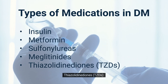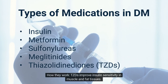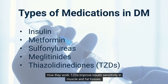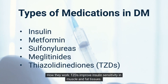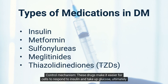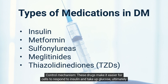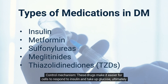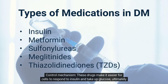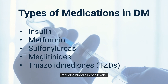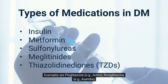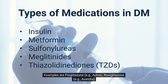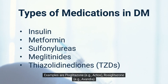Thiazolidinediones (TZDs) improve insulin sensitivity in muscle and fat tissues. These drugs make it easier for cells to respond to insulin and take up glucose, ultimately reducing blood glucose levels. Examples are pioglitazone (Actos) and rosiglitazone (Avandia).